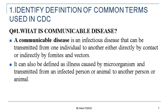For better understanding, it is very good to answer this question first. Question number one: What is Communicable Disease? A communicable disease is a disease that can be transmitted from one individual to another, either directly by contact or indirectly by fomites and vectors. Or it can also be defined as an illness caused by microorganisms and transmitted from an infected person or animal to another person or animal.